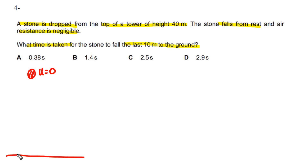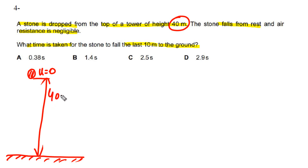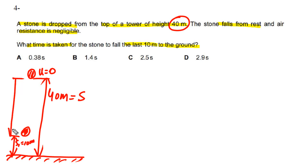The ground is at the bottom, and the total height is 40 meters, so s = 40 m. The last 10 meters is labeled s1 = 10 m. This means the distance from the drop point to 10 m above the ground is s2 = 30 m (40 minus 10).